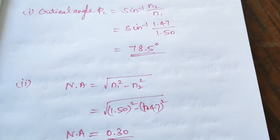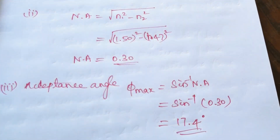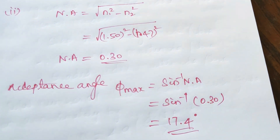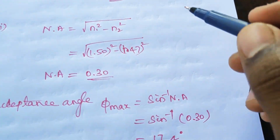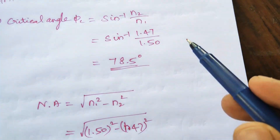To summarize: critical angle, numerical aperture, and acceptance angle — along with their respective equations and formulas.